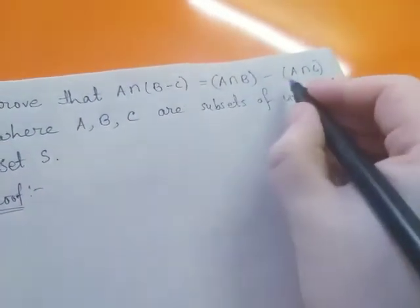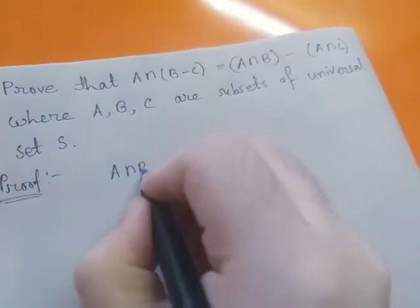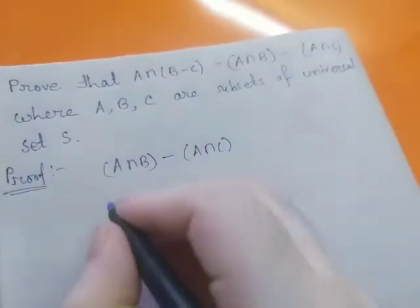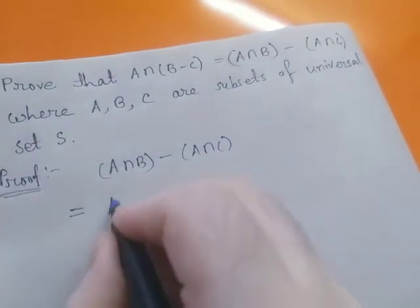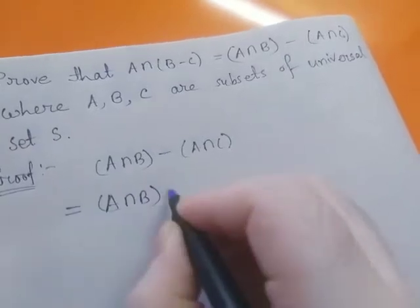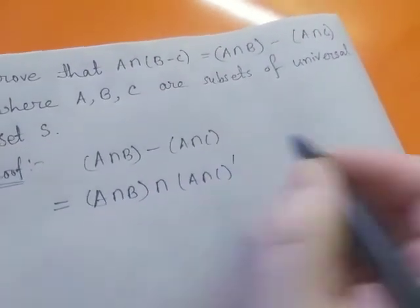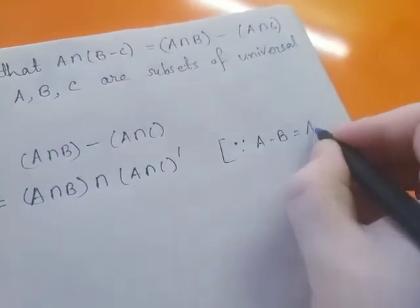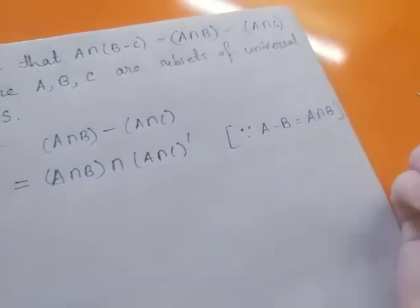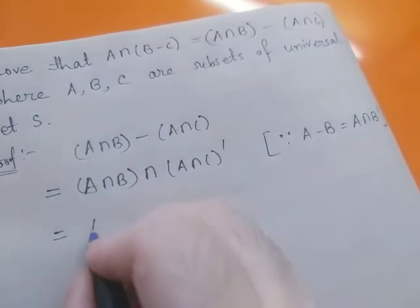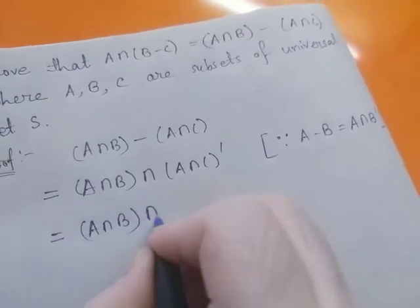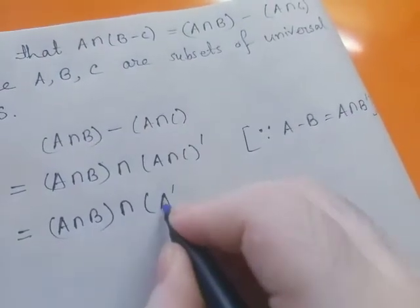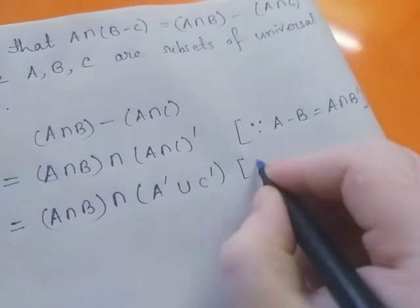We start with the right hand side, that is (A intersection B) minus (A intersection C). This equals A intersection B intersection (A intersection C) complement, since we know A minus B can be written as A intersection B complement. Now, (A intersection C) complement can be written as A complement union C complement by De Morgan's law.